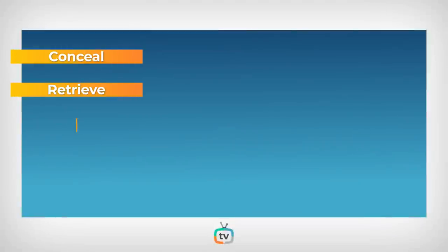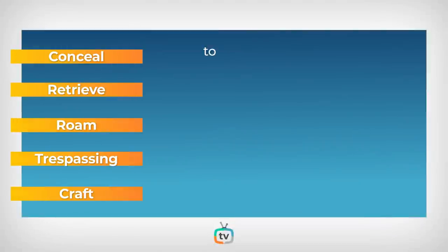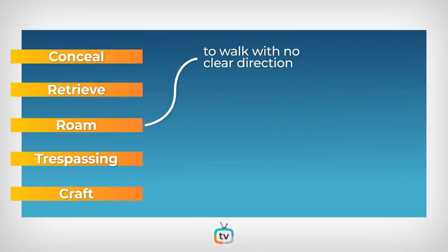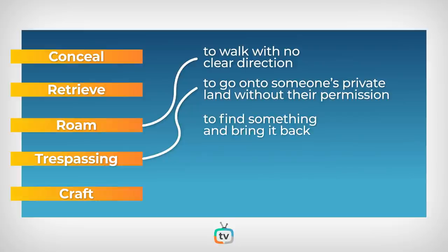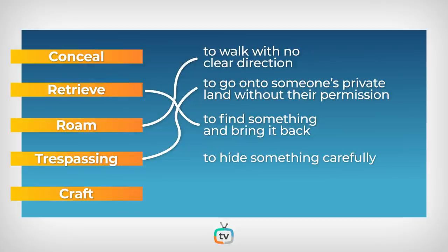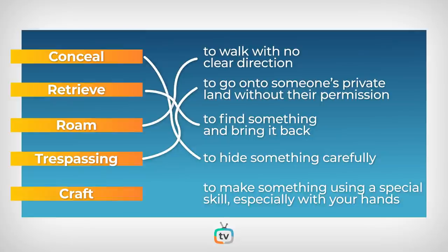Before we read the passage, we're going to look at five verbs and five definitions to match. To walk with no clear direction — that's roam. To go onto someone's private land without their permission — that's trespassing. To find something and bring it back — that's retrieve. To hide something carefully — that's conceal. To make something using a special skill, especially with your hands — that's craft.